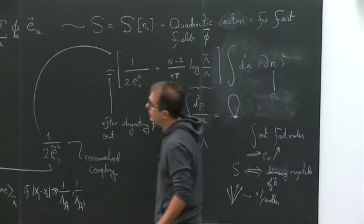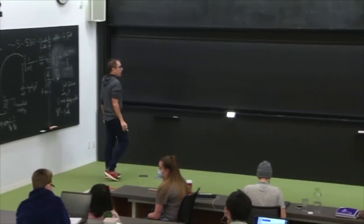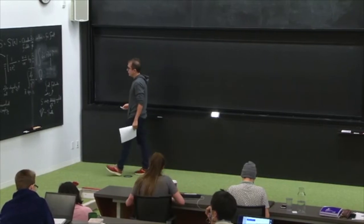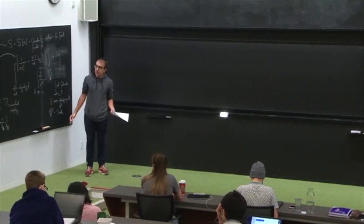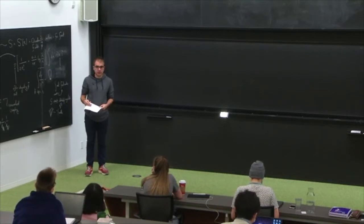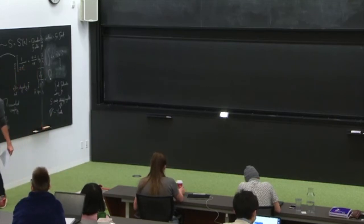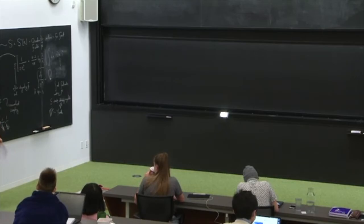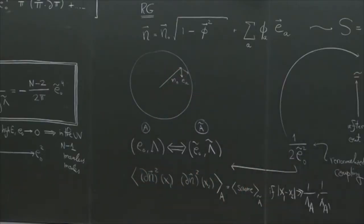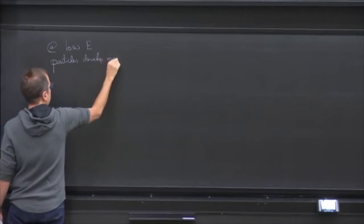When N equals 2 there is no flow because the theory is effectively free. At low energy the theory becomes strongly coupled, and it is much harder to understand what is happening. Working harder, one finds that the particles are not massless but instead develop some mass M at low energy.